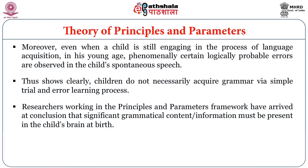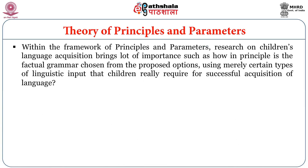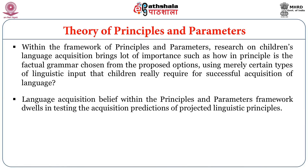Researchers working in the principles and parameters framework have arrived at the conclusion that significant grammatical content or information must be present in the child's brain at birth. Though several languages across the world showcase different grammars, the primary argument in principles and parameters is that the options for variations in grammar are extremely limited. Research on children's language acquisition within this framework explores how the factual grammar is chosen from proposed options using merely certain types of linguistic input that children really require for successful language acquisition.